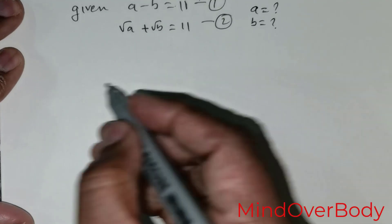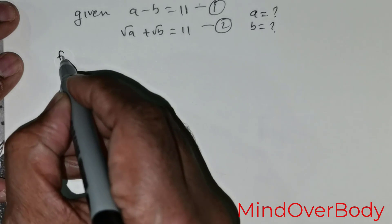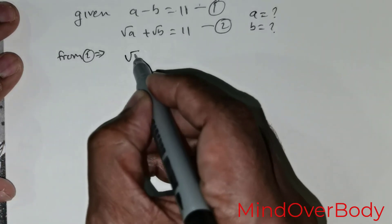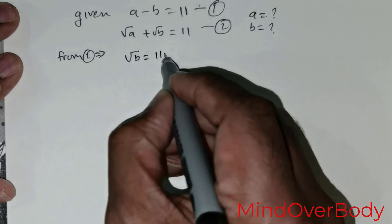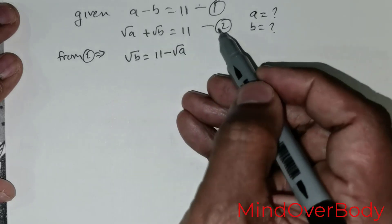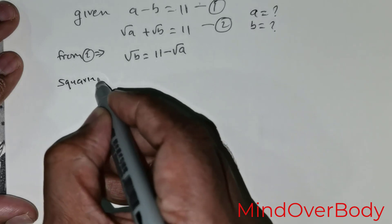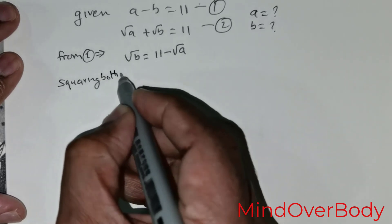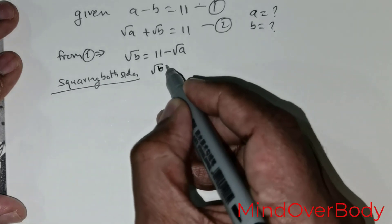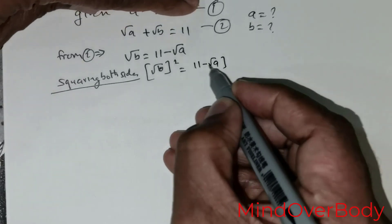I am going to be doing this question by a couple of methods. From equation 2, I can rewrite this as root of B is equal to 11 negative root of A. I am just pushing the root A to the other side. Now I am going to be squaring both sides, so I get root of B raised to the power 2 is equal to 11 negative root of A raised to the power 2.